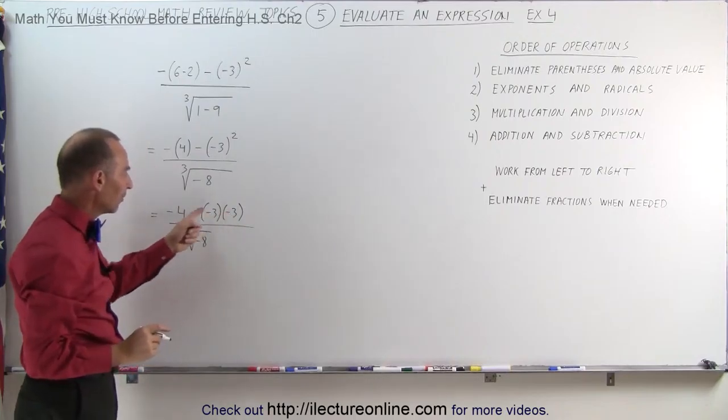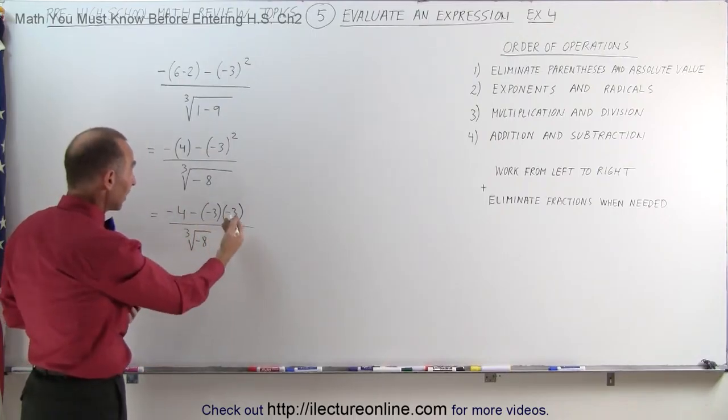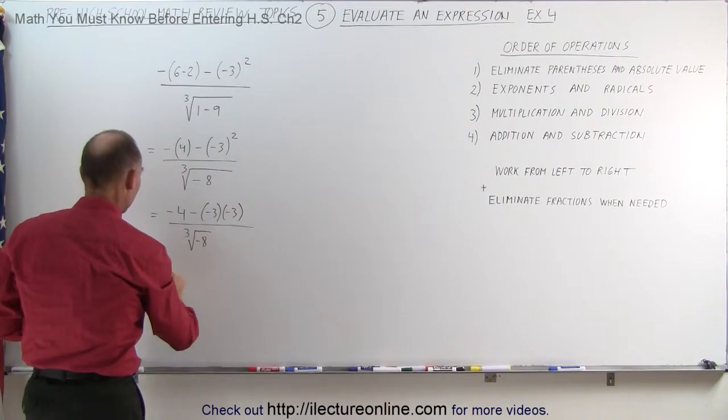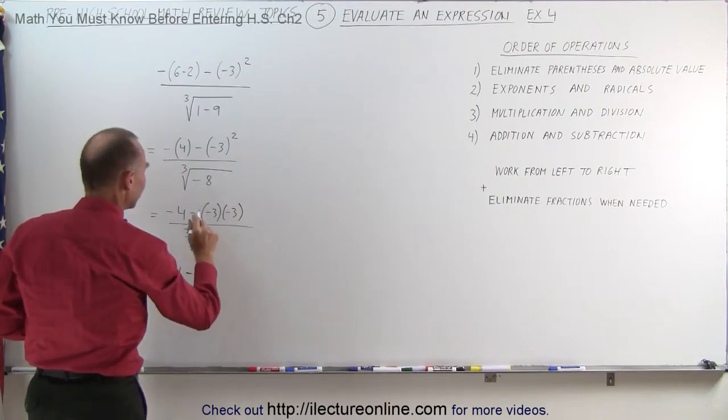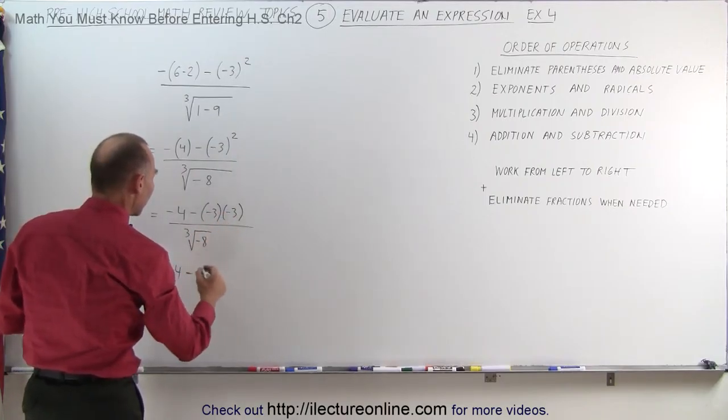So in the numerator, we can simplify that by multiplying negative 3 times negative 3, which is negative 3 squared. This is equal to minus 4 minus, negative 3 times negative 3 is a positive 9.